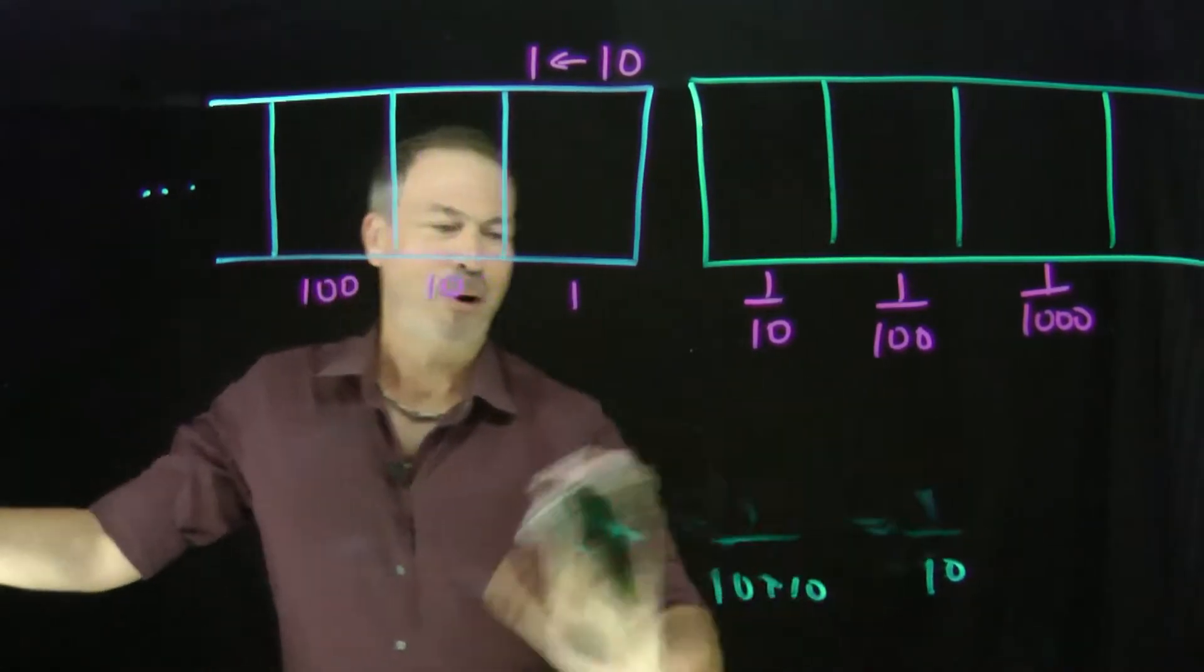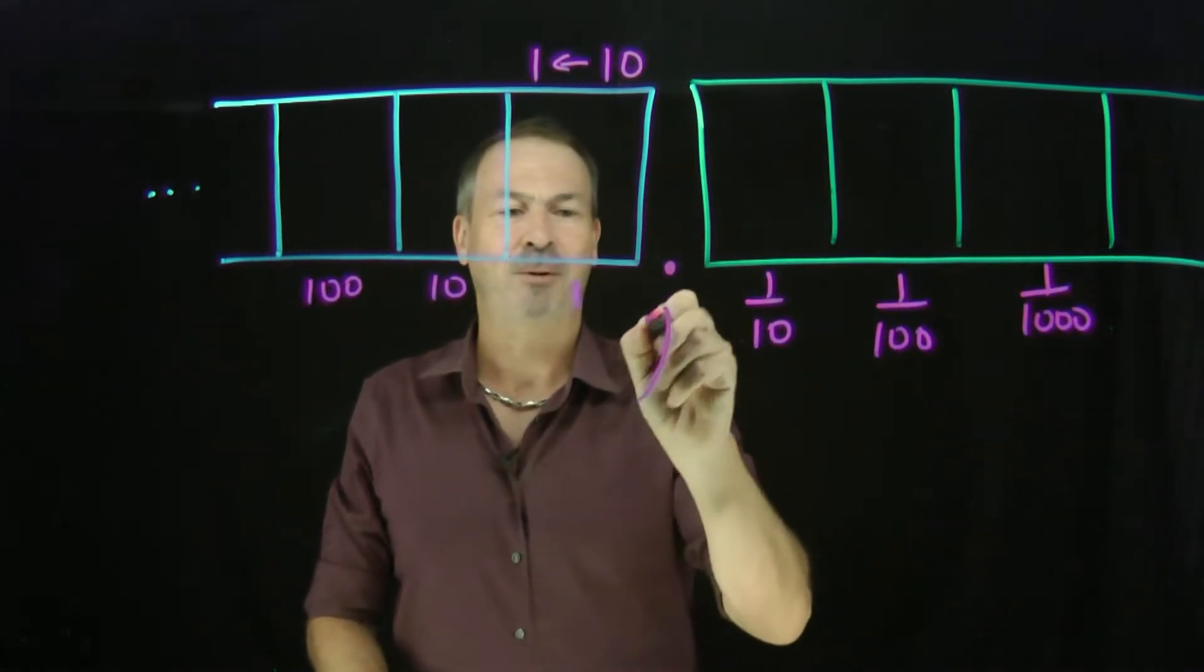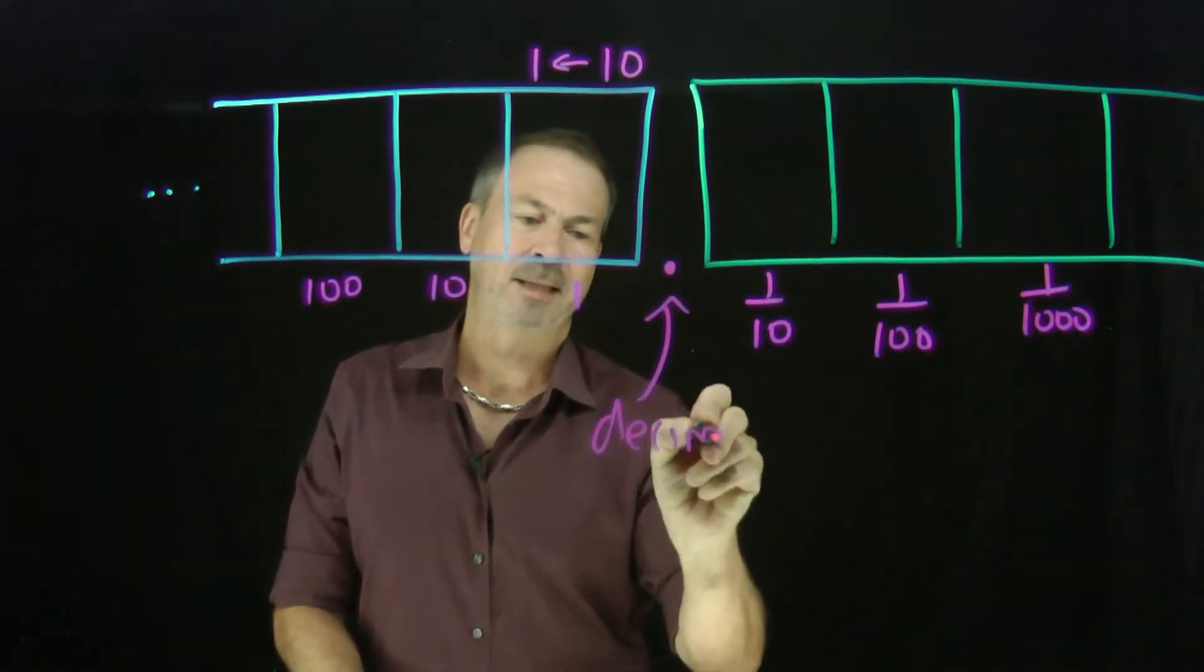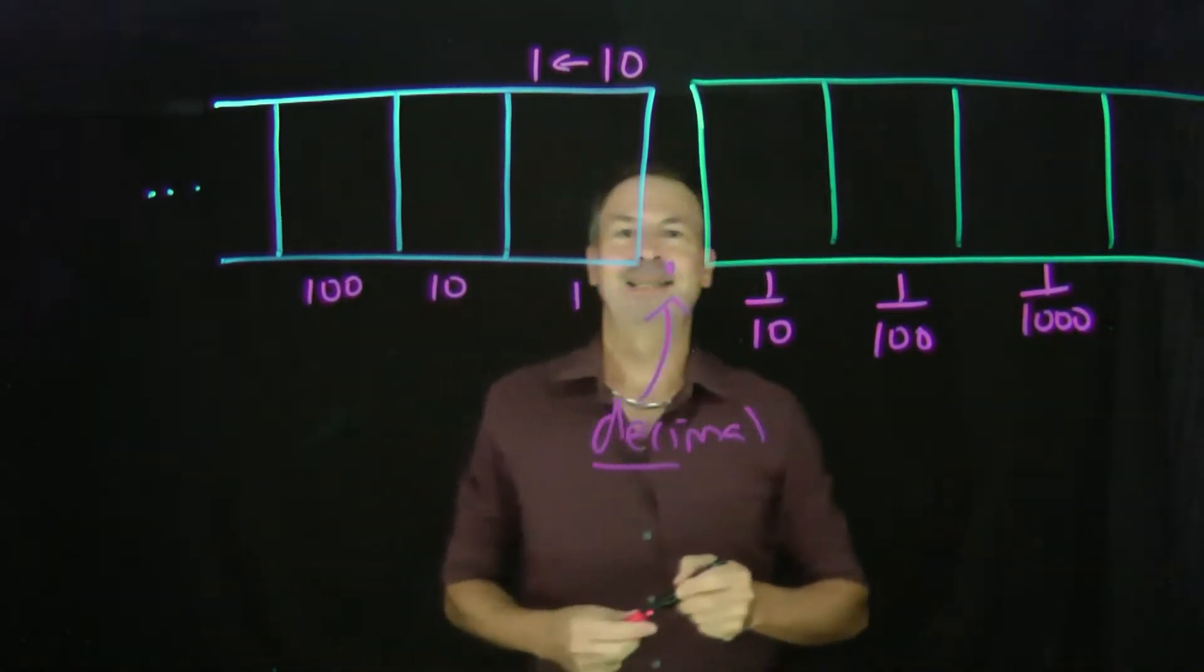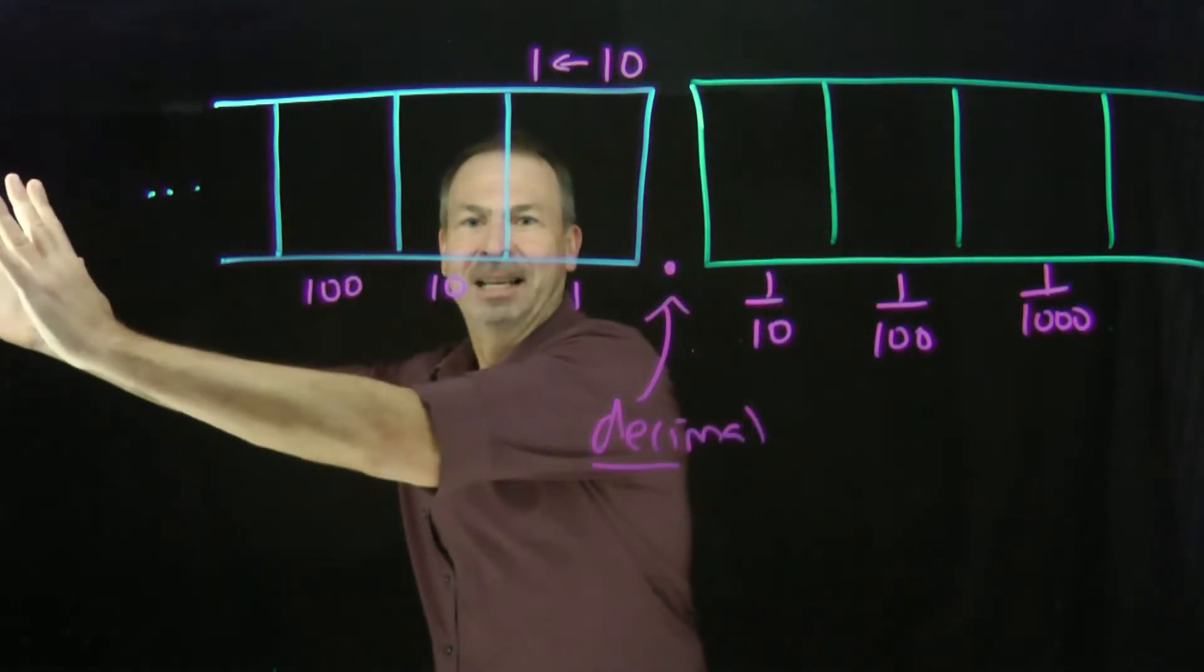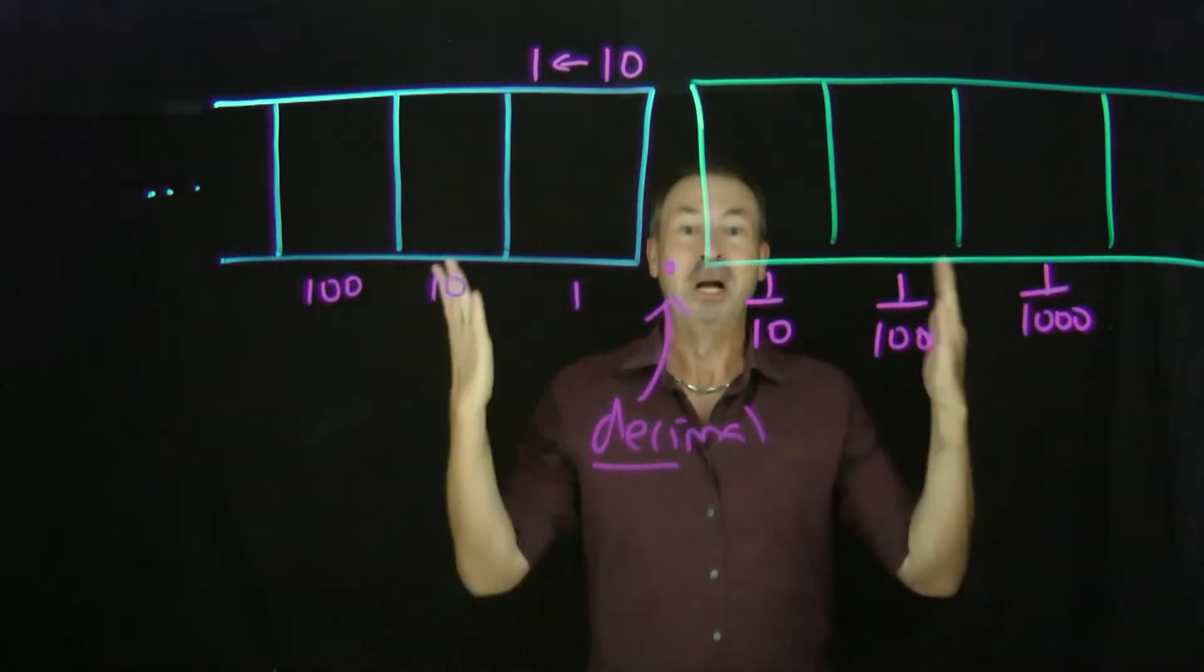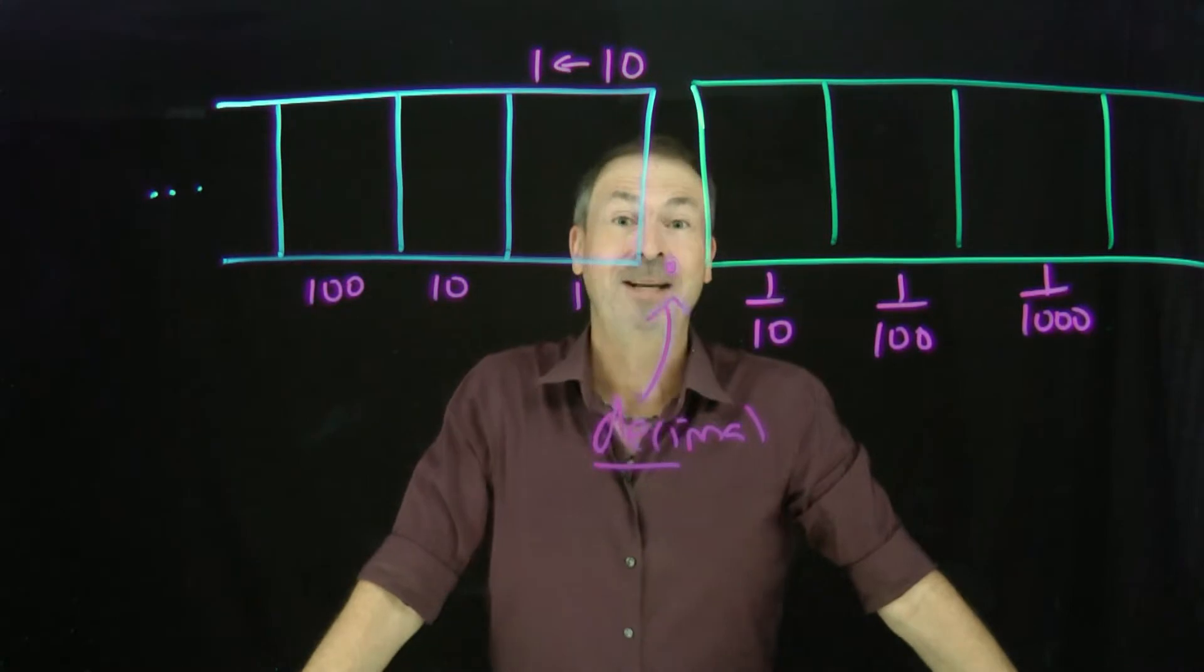And people usually separate these boxes with a point, and they call that little point here a decimal point. Decimal point. Decimal. And deci means 10. So we're separating boxes with the powers of 10 to the left with boxes with the powers of a tenth to the right with a decimal point. Deci meaning 10. We've just discovered what people call decimals.